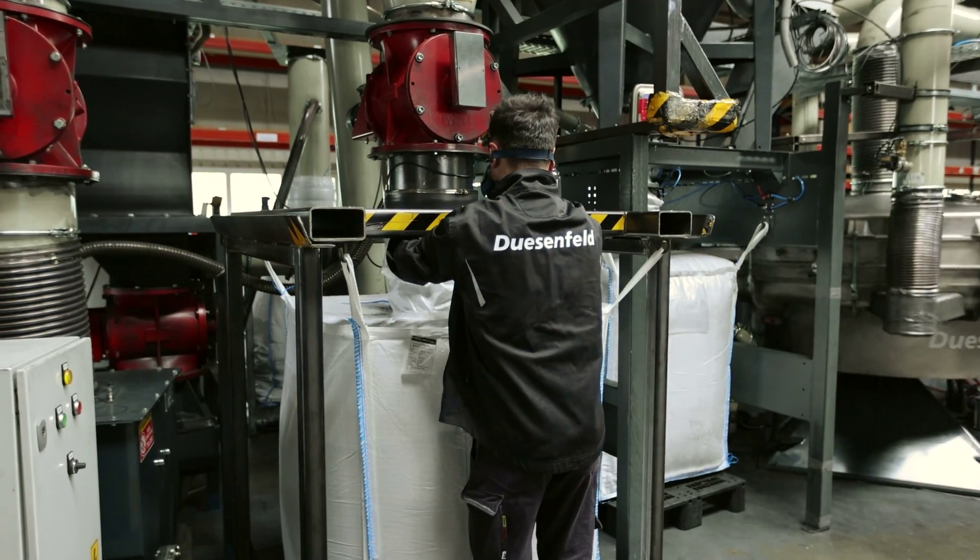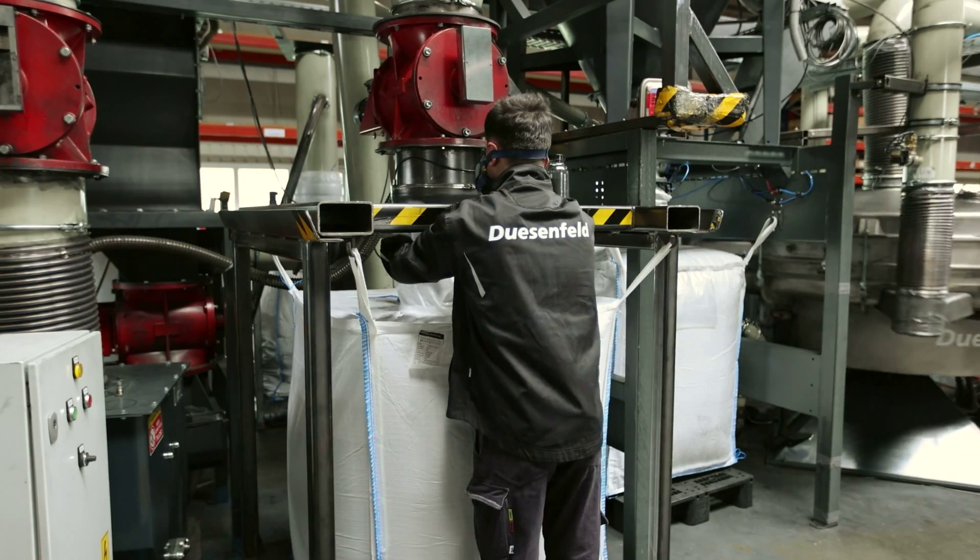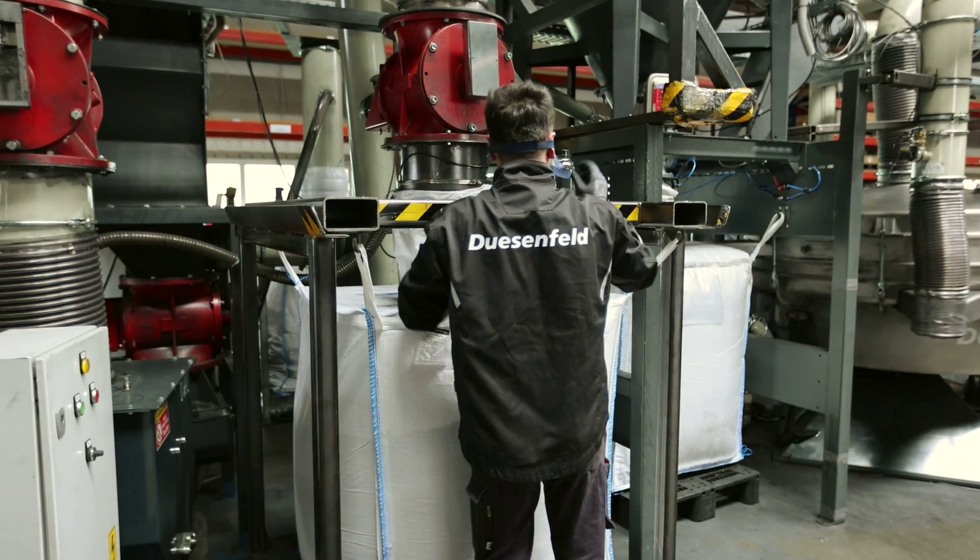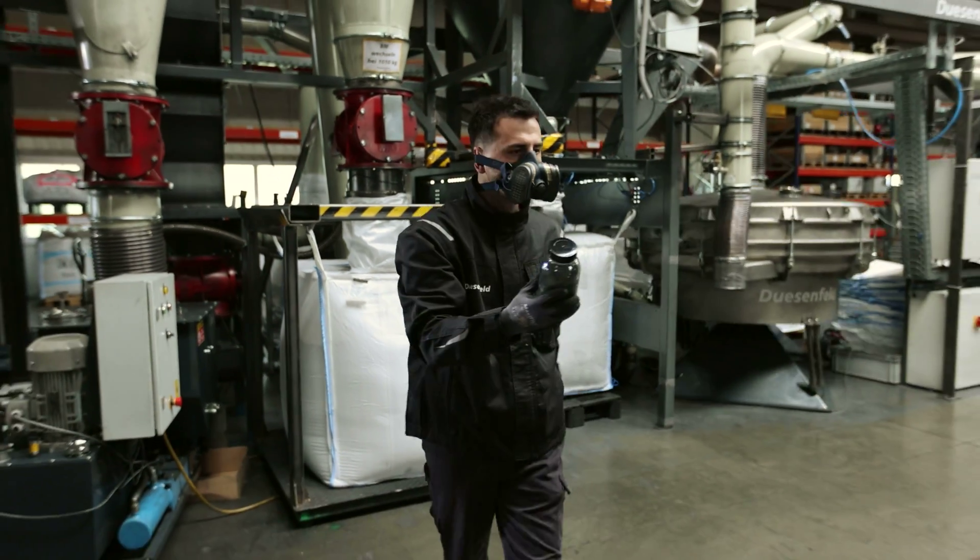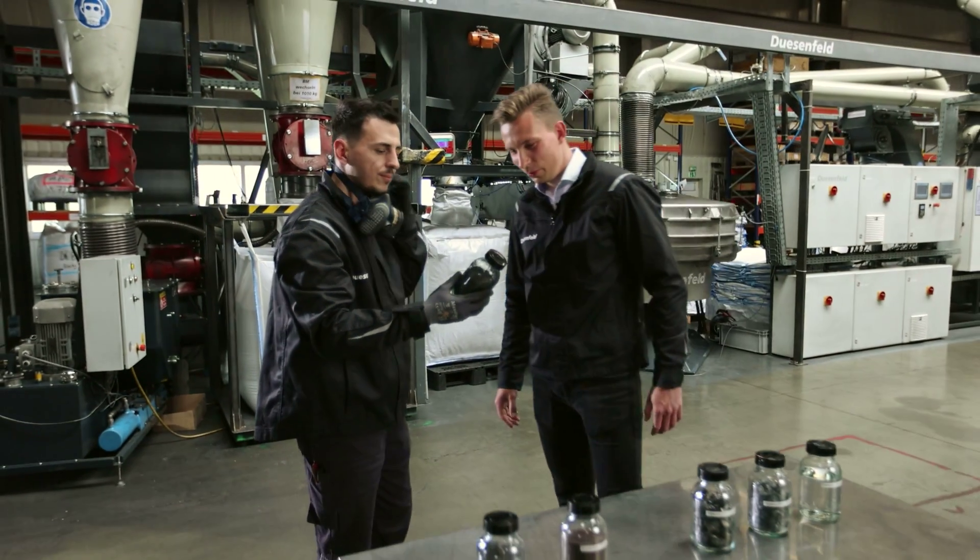The individual substances are collected in large bags. The valuable substances, such as cobalt, nickel, manganese, and lithium are now in a powder-like black material.